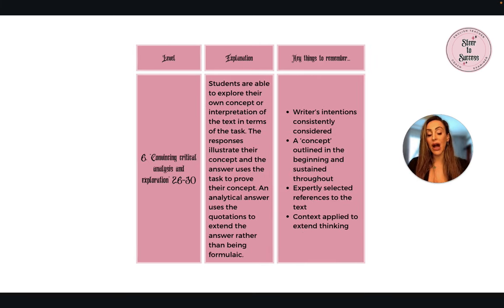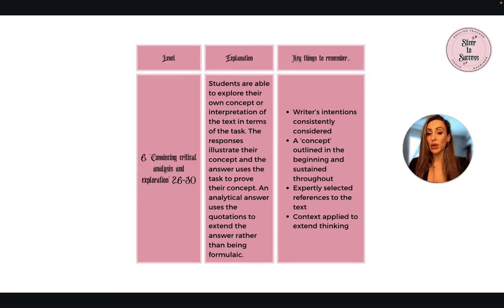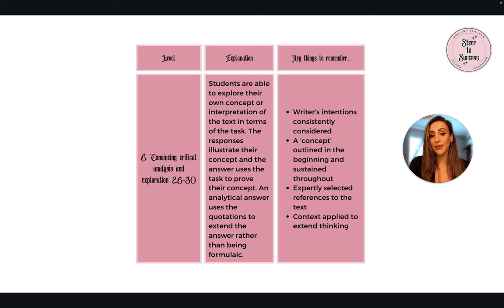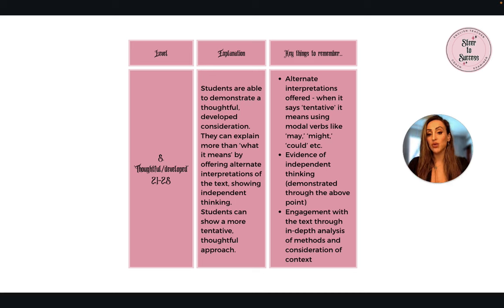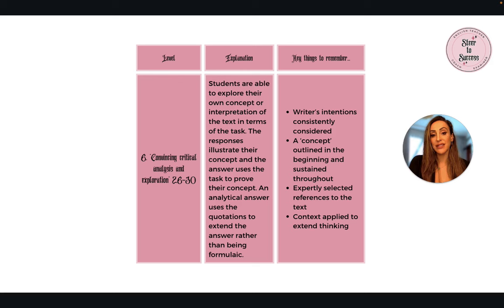To move from thoughtful and developed, you want to push into convincing critical analysis and exploration — this is the top of the mark scheme. This is where the idea of having a concept, a thread that runs through your essay, comes in. Level five is 21 to 25 marks — roughly grade seven, maybe pushing towards grade eight. Band six is 26 to 30 marks — grade eight, and at the very top, grade nine. Students are able to explore their own concepts or interpretation of the text in terms of the task.